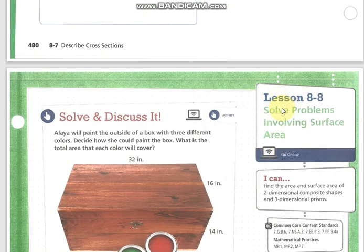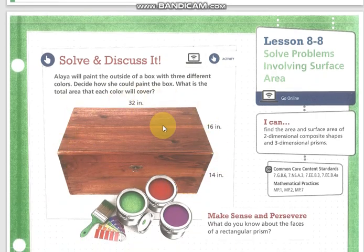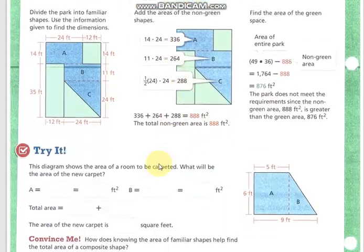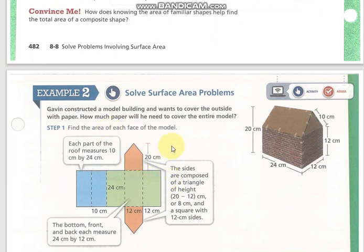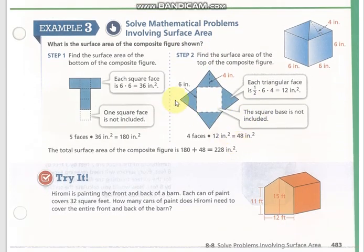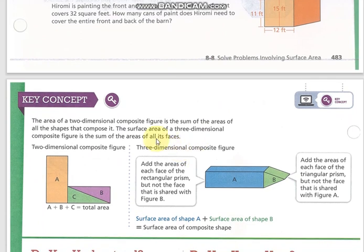Later we will start lesson 8-8, which is solve problems involving surface area. Because I have a 3D shape now, I want to find the surface area, which means the total areas of all the faces. So I need to imagine that shape and start and count each face alone. If it is a cube, if it's a cone, if it's a cylinder - whatever, each one of them needs different equations.